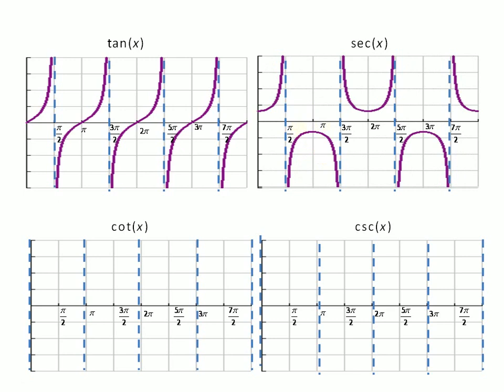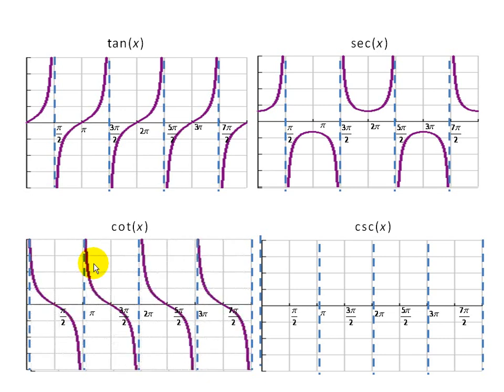Now, as far as cotangent and cosecant go, well, we remember the basic shape, for example, of cotangent. It's unlike tangent. It's decreasing. It looks a lot like tangent, but it's decreasing, and we talked about that before.